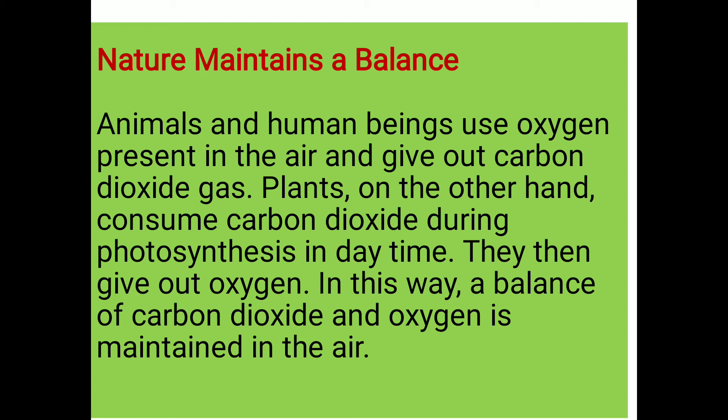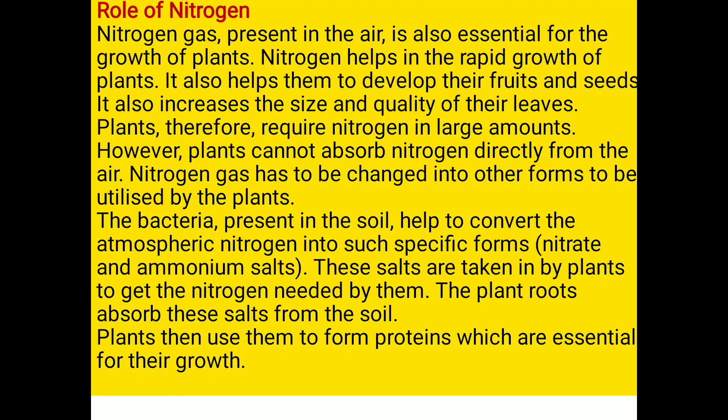Plants consume carbon dioxide during photosynthesis in the daytime and give out oxygen. In this way, a balance between carbon dioxide and oxygen is maintained in the air. Animals and human beings use oxygen and release carbon dioxide; plants take in that carbon dioxide and release oxygen during photosynthesis. You will draw the diagram on page number 99.